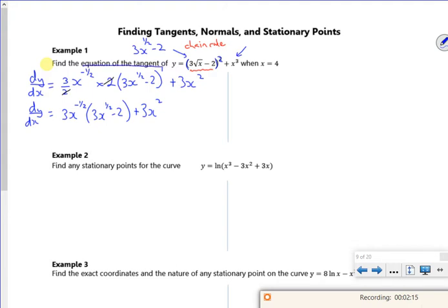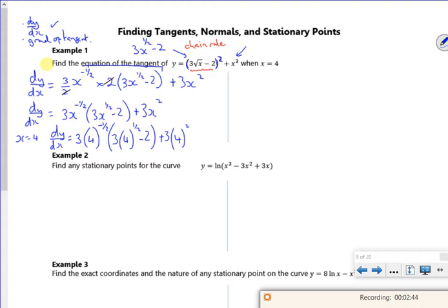Right, so I want the equation of the tangent. So I've done my dy by dx. So I need to find the gradient of the tangent now. So when x is 4, dy by dx is... And if you stick that in your calculator exactly how you see it, it gives you 54 out of it.